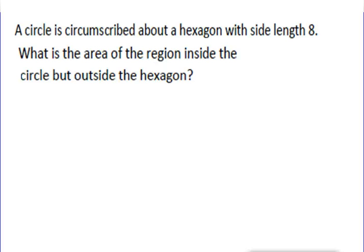A circle is circumscribed about a hexagon with side length 8. What is the area of the region inside the circle but outside the hexagon?